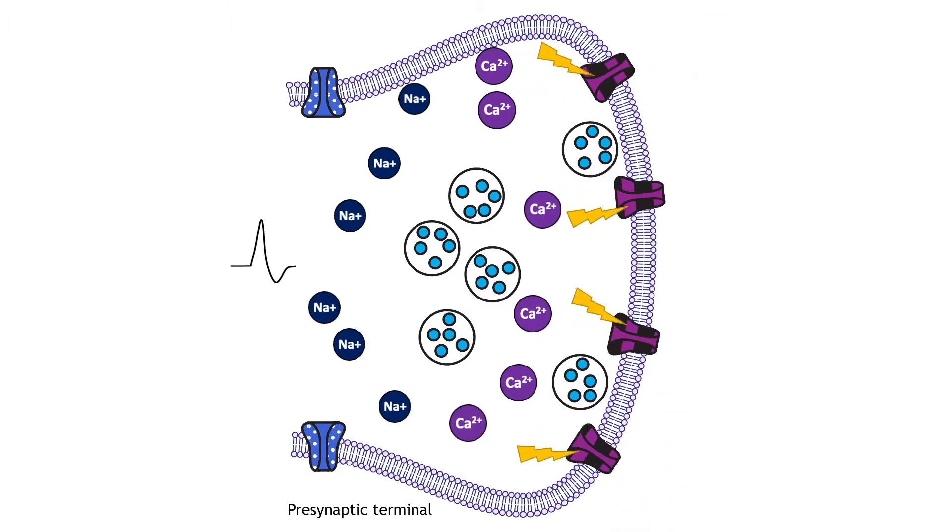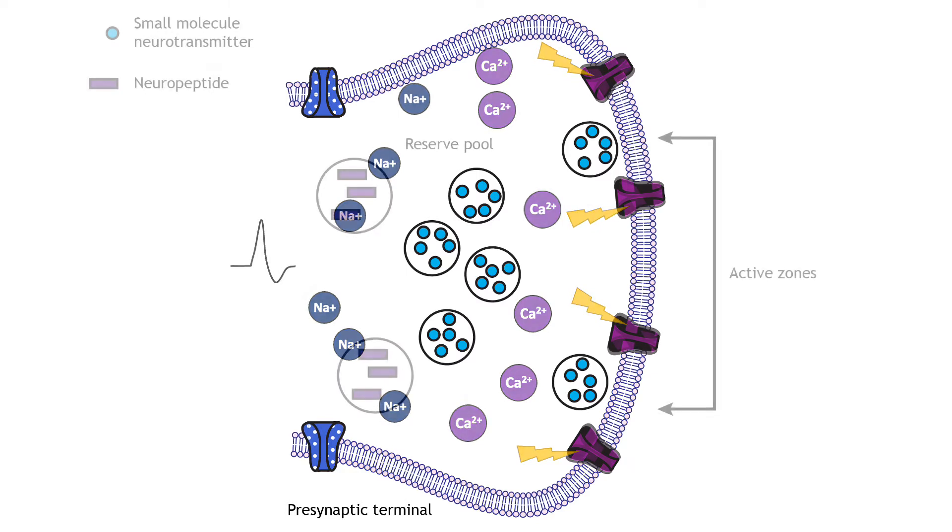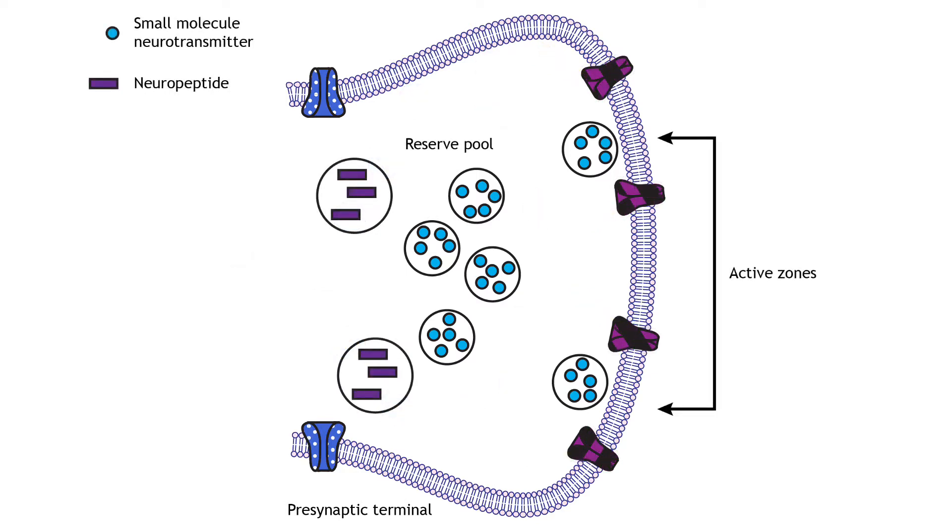There is a strong electrochemical gradient that moves calcium into the terminal. The voltage-gated calcium channels are concentrated in the presynaptic terminal at active zones, the regions of the membrane where small molecule neurotransmitters are released.